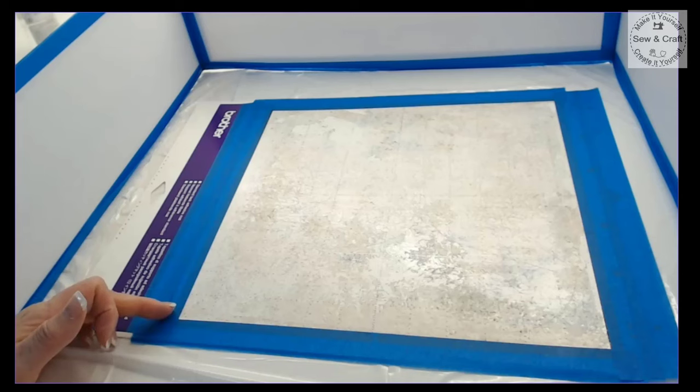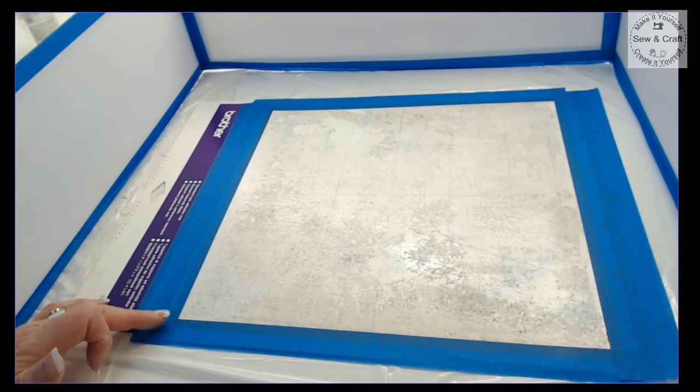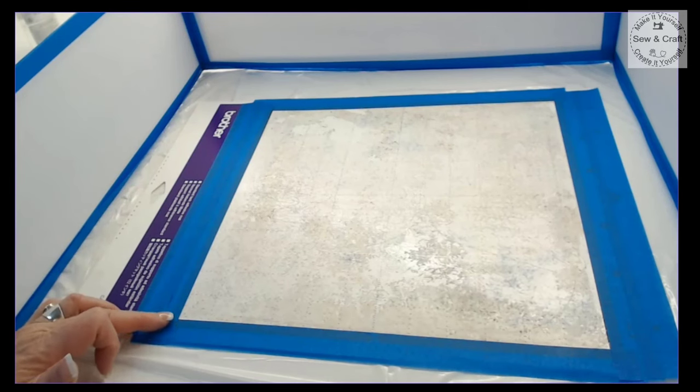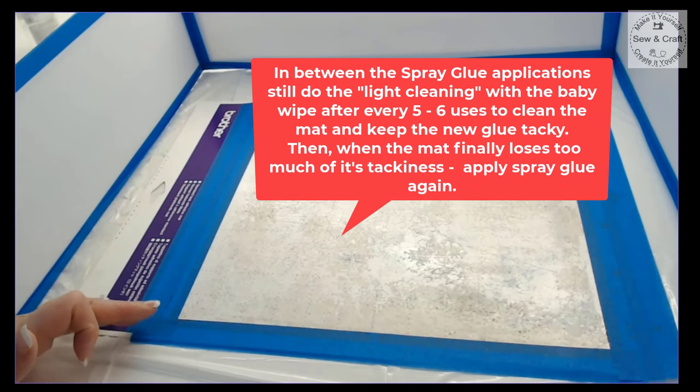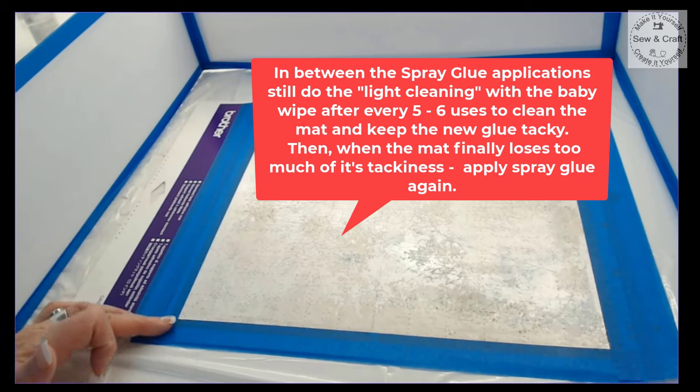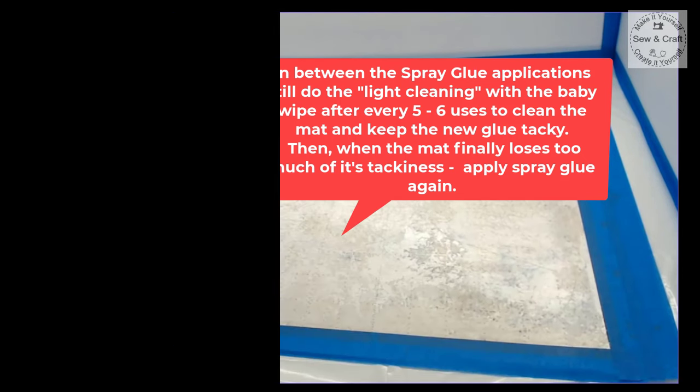The reason that I do this every five to six months is because I use my scan and cut a lot. If you don't use yours as frequently then you might only have to apply glue once every eight months, but it will depend on how often you use it. But it is important that in between the spray glue applications to do the light cleaning with the baby wipes after every five to six uses to keep the mat tacky and to keep your new glue clean. Then when the mat finally loses too much of its tackiness again, apply the spray glue again.